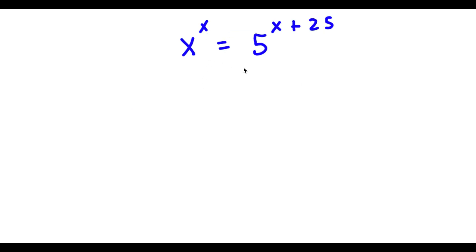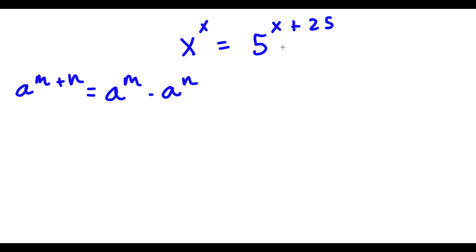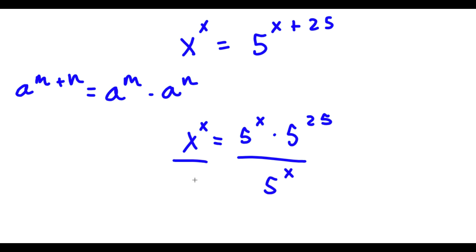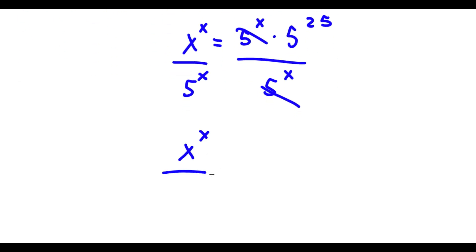Now I have x to the power of x is equal to 5 to the power of x plus 25. To solve this equation, I'm going to first use an important exponent rule which states that a to the power of m plus n equals a to the power of m times a to the power of n. So 5 to the power of x plus 25 equals 5 to the power of x times 5 to the power of 25. Now I can divide both sides by 5 to the power of x, so these cancel out and I'm left with x to the power of x over 5 to the power of x is equal to 5 to the power of 25.